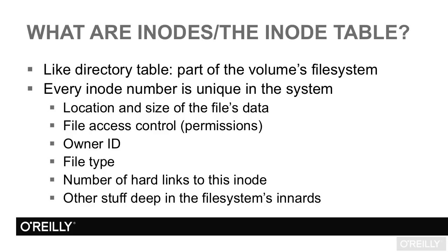What are inodes and the inode table? Like the directory table, the inode table is a file-like part of the volume's file system. Each inode table entry contains the location and size of the file's data, the file's access control permission information, the file owner's ID, the file type, the number of hard links to this inode, and a lot of other stuff that's mostly important when you're writing file system drivers.